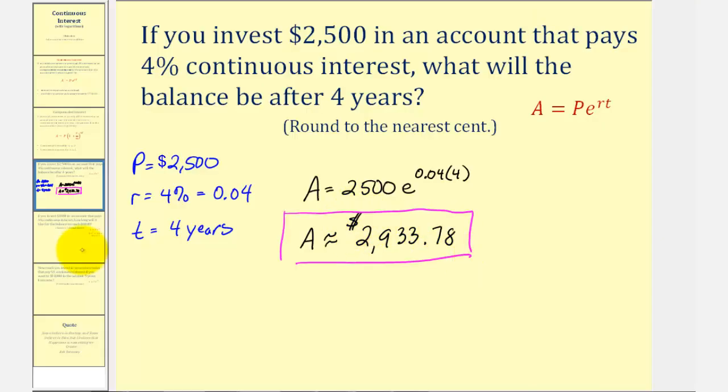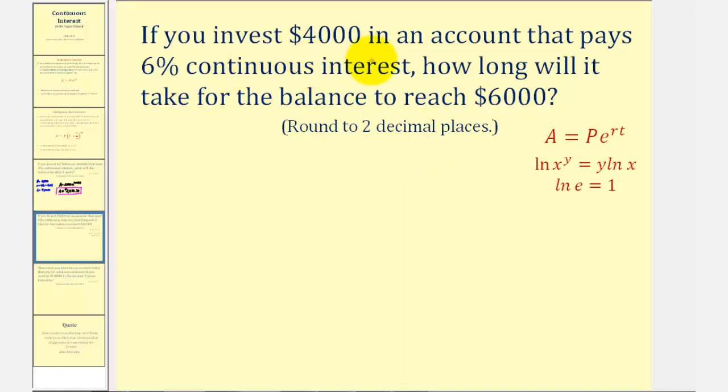Let's take a look at a second example. If you invest $4,000 in an account that pays 6% continuous interest, how long will it take for the balance to reach $6,000?